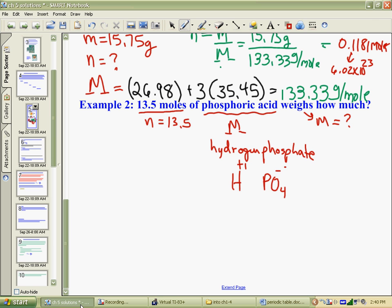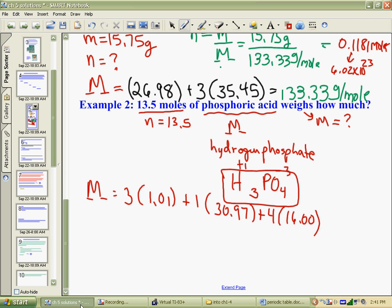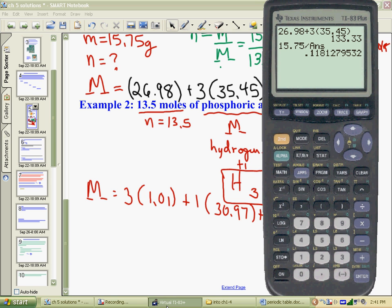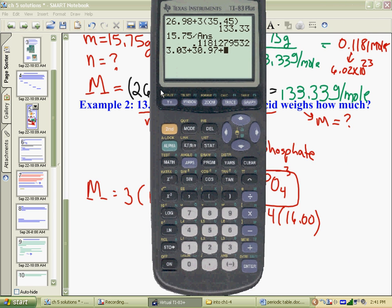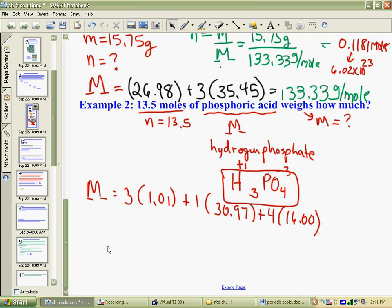So now to get its molar mass, we need to have 3 hydrogens, which are 1.01 each. We have 1 phosphorus, and phosphorus is 30.97. And we would need 4 oxygens that are 16.00. So we will come back to our calculator, and we have 3.03 plus 30.97 plus, how many 16's was that? 4 times 16 gives us 98 grams per mole.